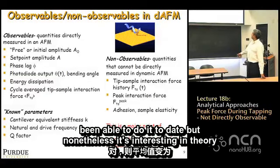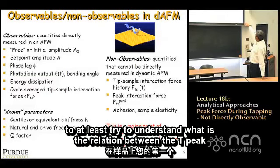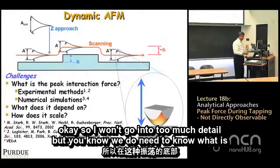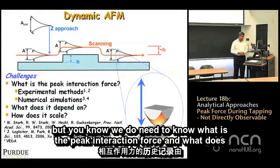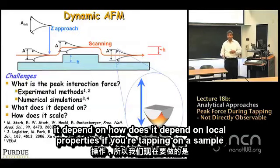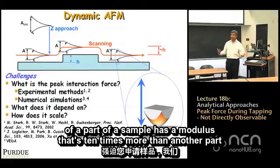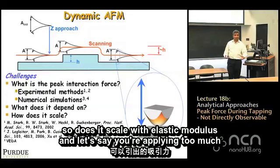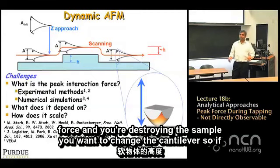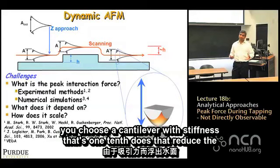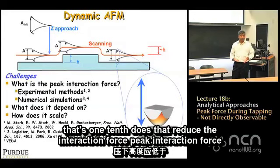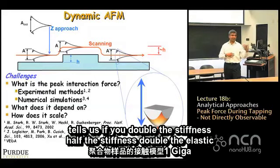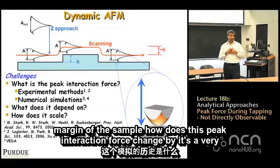It's an extremely difficult thing to do — I don't think anyone has been able to do it to date. But it's interesting in theory to understand the relation between the peak interaction force and the observables. We need to know what the peak interaction force is and what it depends on. If part of a sample has a modulus ten times greater than another part, does the interaction force on the stiffer part scale proportionally? What are the scaling laws?